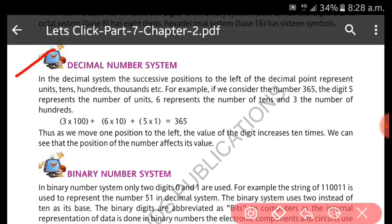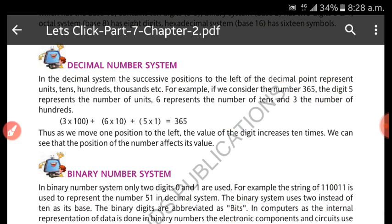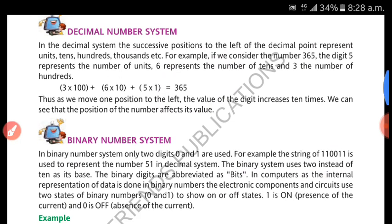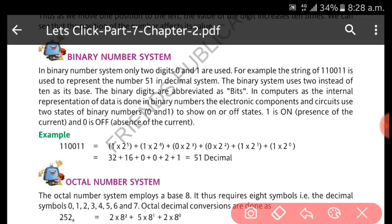In the decimal number system, consider the number 365. The digit 5 represents the units place, 6 represents the tens place, and 3 represents the hundreds place — this is how the number is formed. Now for the binary number system, we will look at the conversion process in which a binary number is converted into a decimal number.